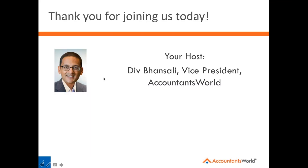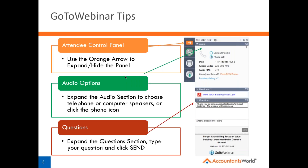Thank you for joining us. I'm Deb Bansali, vice president at Accountants World. Before we turn things over, a quick note on GoToWebinar: if you don't see the control panel, look for an orange arrow to expand or hide it. You can check audio options by clicking the audio tab — select computer audio or phone call, which will provide a dial-in number and access code. If you have questions during the presentation, type them in the questions tab.